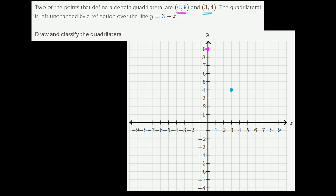And then they tell us that the quadrilateral is left unchanged by a reflection over the line y is equal to 3 minus x. So when x is 0, y is 3, that's our y-intercept. And it has a slope of negative 1. You could view this as 3 minus 1x.